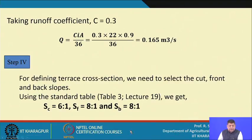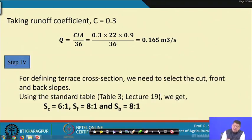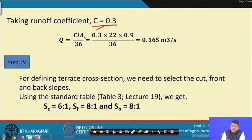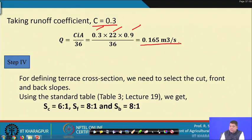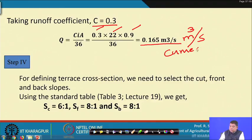Now applying the rational formula with C = 0.3, I = 22 cm/hr, and A = 0.9 hectares: Q = 0.3 × 22 × 0.9 / 36 = 0.165 cubic meters per second. This is the peak runoff rate the terrace channel must handle.